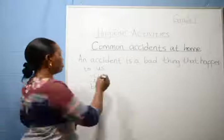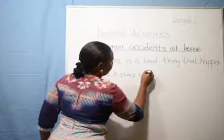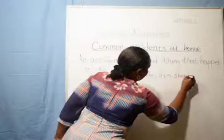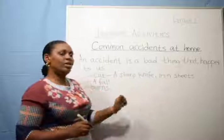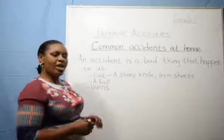Those are the common accidents at home. Can you tell me what can cut you? A sharp knife. Yes, when you play with iron sheet it can cut you. Iron sheets can cut you. So you are not supposed to play with those sharp things, because when you play with them you can cut yourself. You are not supposed to play with a sharp knife or iron sheet because they can cut you.